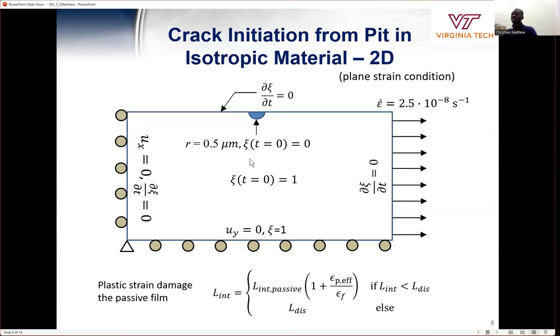So this is the 2D domain we modeled and simulated, as shown here. This is the boundary condition. The Dirichlet and the Neumann boundary conditions are defined accordingly. The pit is introduced at the top with the phase variable to be zero, and the solid domain, the phase variable to be one, and the constant strain rate is defined at the right hand side.